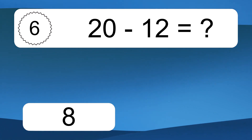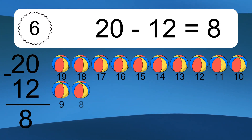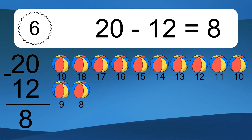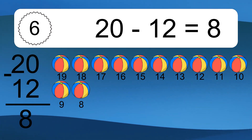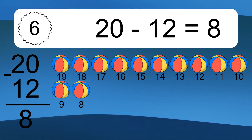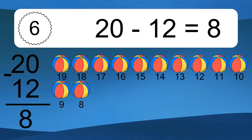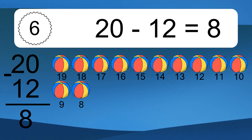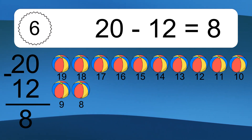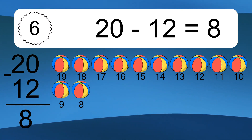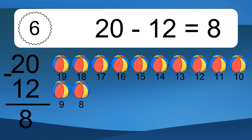20 minus 12 equals what? 20 minus 12 equals 8. Let's count it. 19, 18, 17, 16, 15, 14, 13, 12, 11, 10, 9, 8.